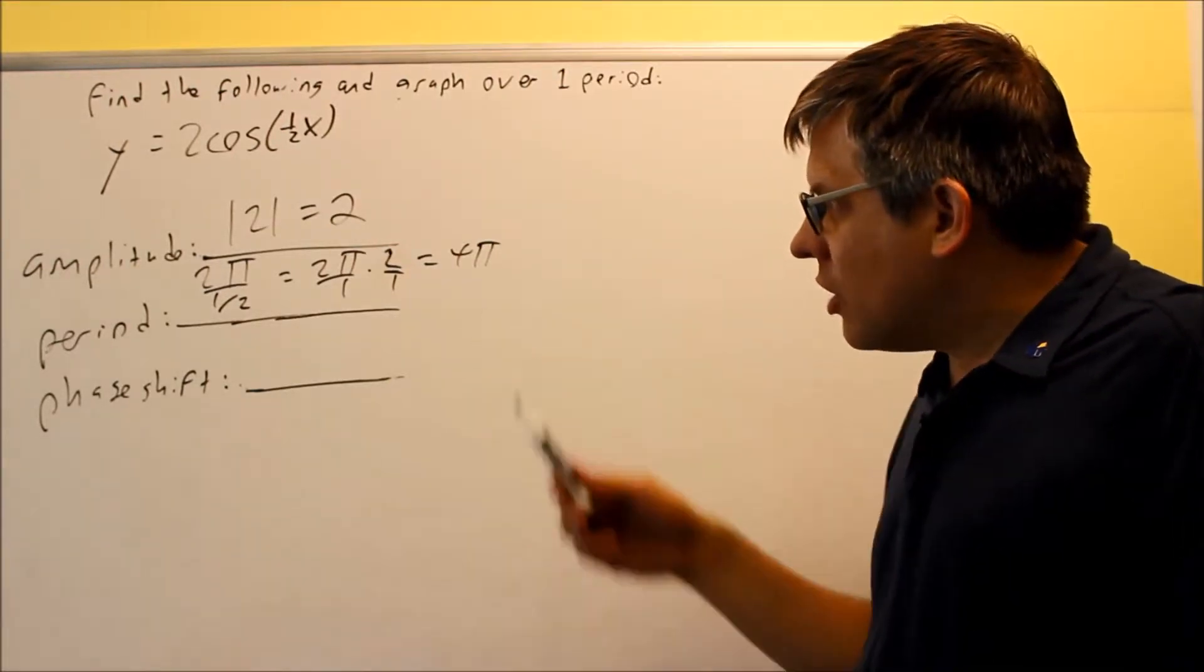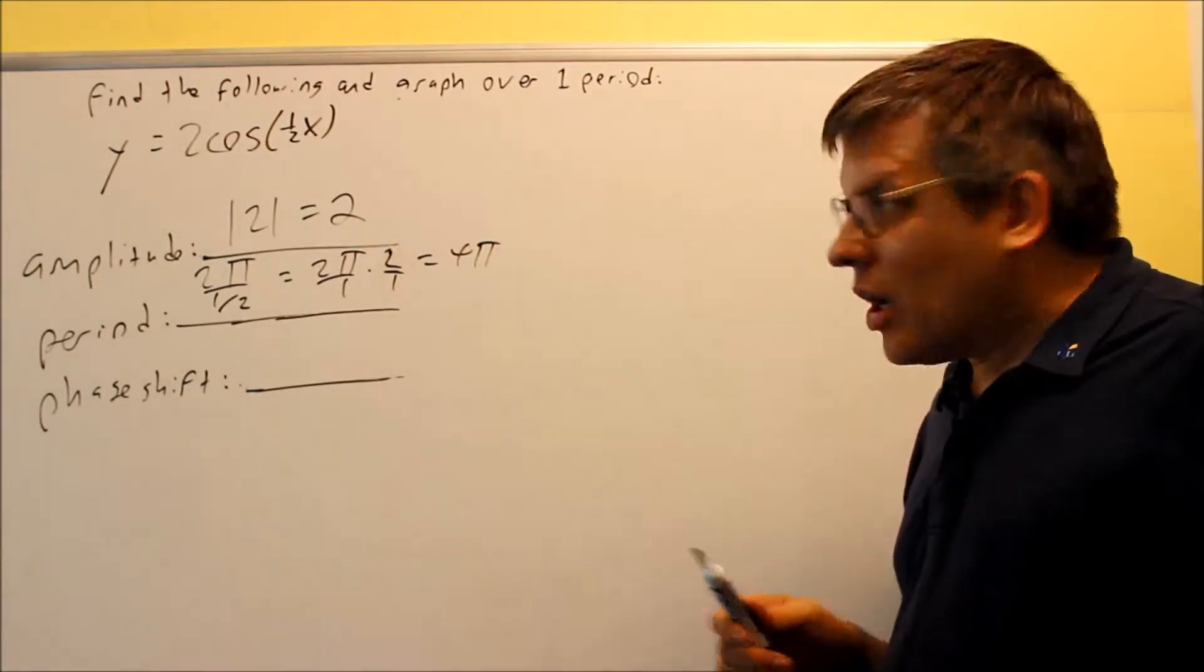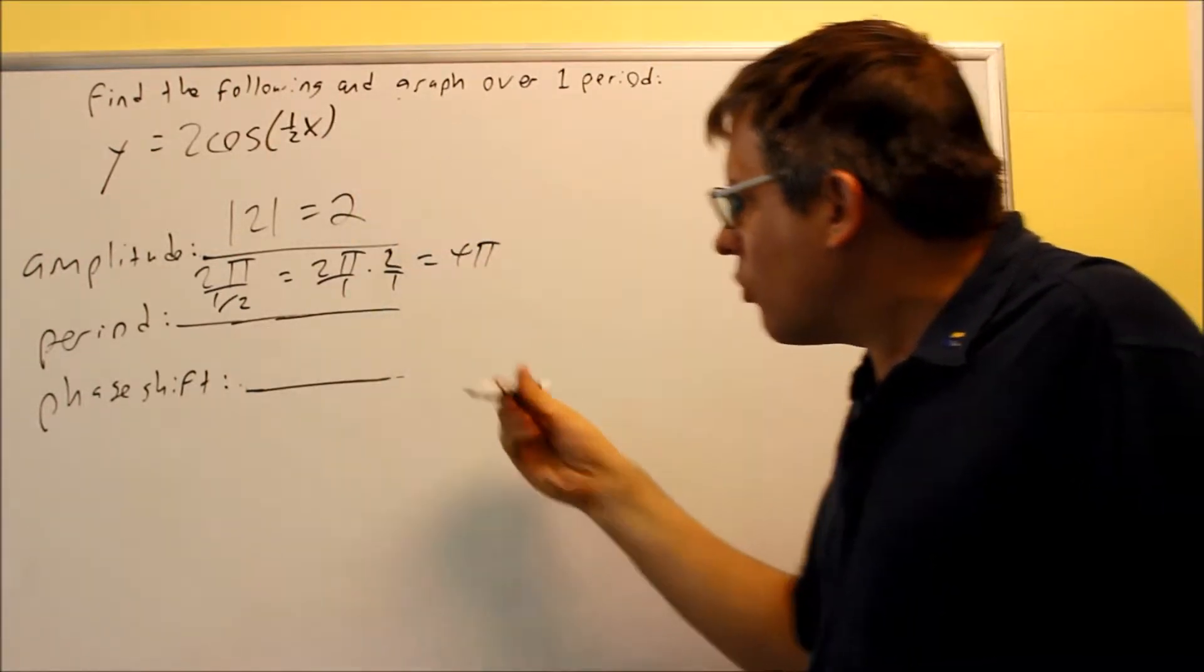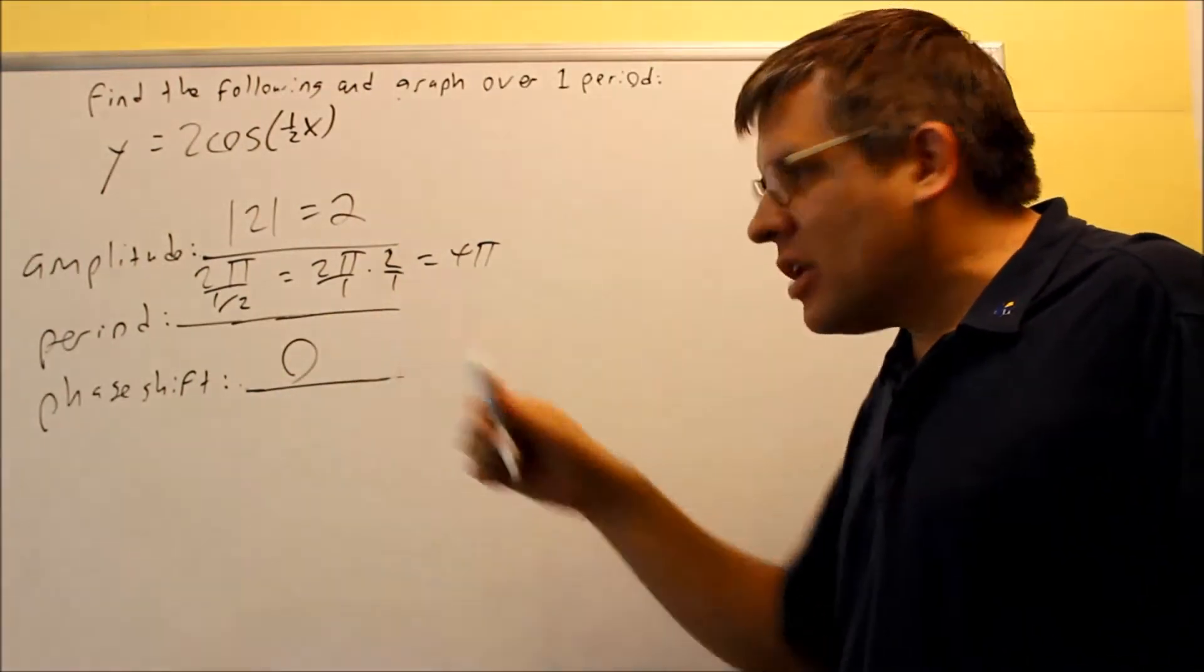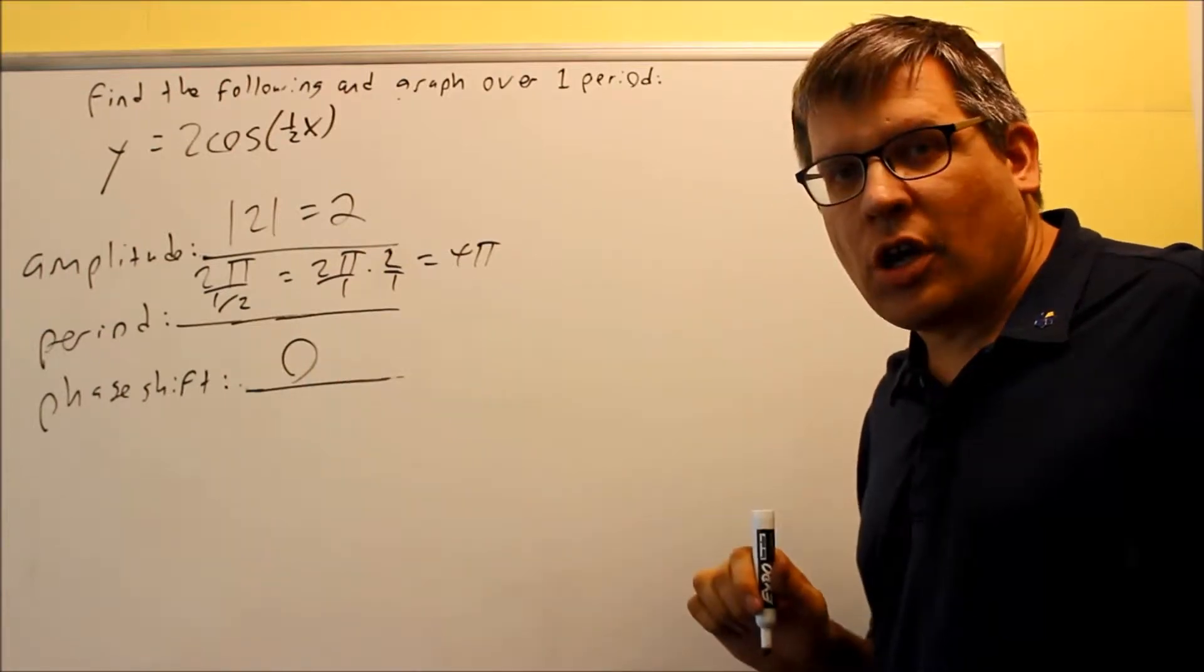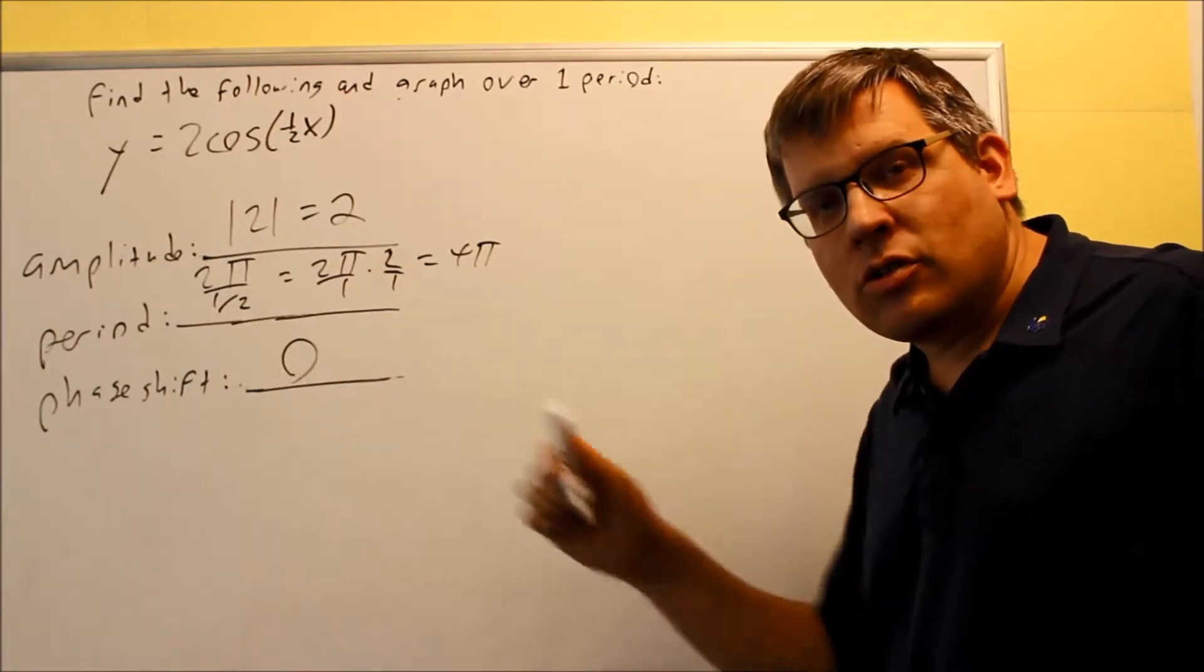Now for the phase shift, we're still going to have a 0 in this case, because we don't have any number after the x here. So we do have a phase shift that's going to be 0. That means that 0 is going to be one of your initial key points, that's where your graph is going to begin. The graph always begins at your phase shift.